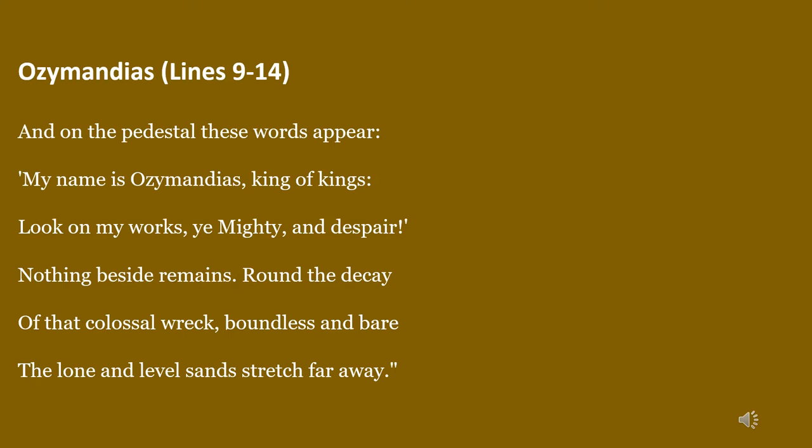These words were inscribed at the behest of King Ozymandias when he got this statue made for himself. The lines coming in inverted commas are actually inscribed at King Ozymandias's command. These lines give us an idea of how King Ozymandias liked to project himself.